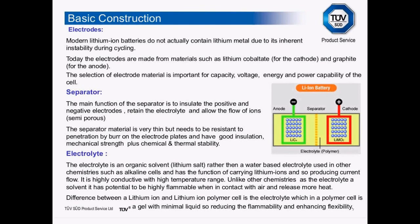The cell consists of three main parts: the electrode, the separator, and the electrolyte. The electrode in modern lithium-ion cells does not actually contain lithium metal due to instability during cycling. Today the electrodes are made from materials such as lithium carbonate for the cathode, and typically graphite for the anode. The selection of electrode material is important to maximise capacity, voltage, energy, and power capability of the cell.